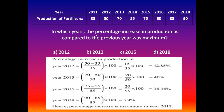The next question is: in which year was the percentage increase in production compared to the previous year maximum? Options are A) 2012, B) 2013, C) 2015, D) 2018. For 2012: it contains 50 tons and 2011 contains 35 tons. Percentage increase = (50 minus 35) divided by 35 multiplied by 100, which equals 42.85%.